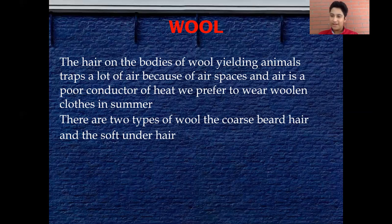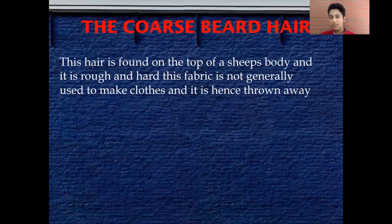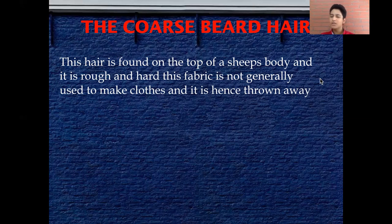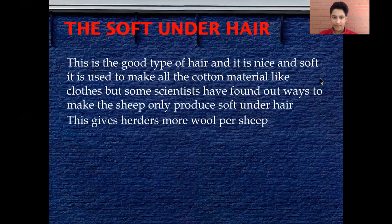There are two types of wool: the coarse beard hair and the soft under hair. The coarse beard hair is found on top of a sheep's body — it is rough and hard and is not generally used for making clothes or blankets, so it is thrown away. The soft under hair is nice and soft and is used to make all woolen material things such as blankets and clothes.